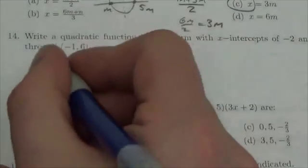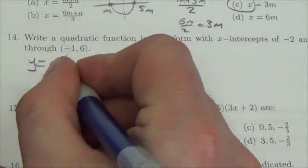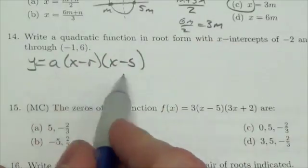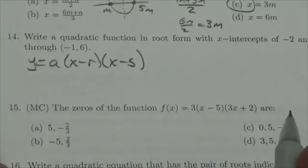Now we're going to do this in root form, and root form looks like this: y equals a times x minus r times x minus s, where r and s are both the roots or the x-intercepts of the graph.